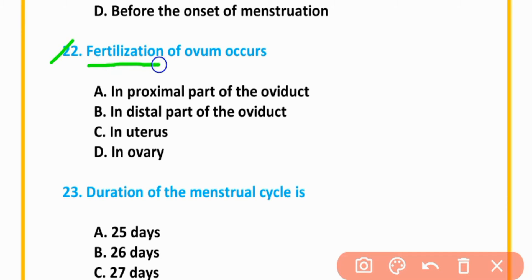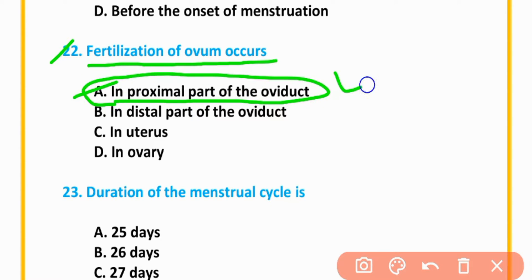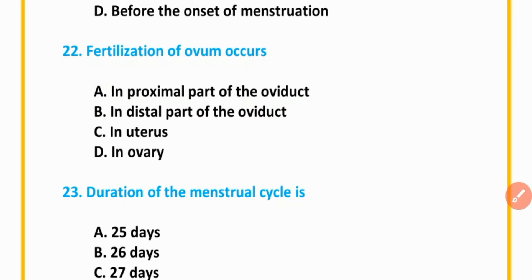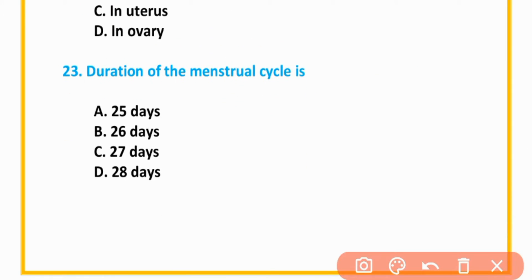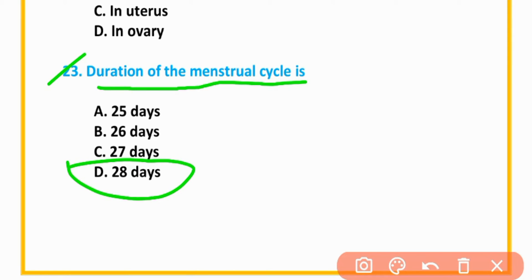MCQ number 22: Fertilization of ovum occurs in the proximal part of the oviduct. Option A is correct. MCQ number 23: Duration of the menstrual cycle is twenty-eight days. Option D is correct.